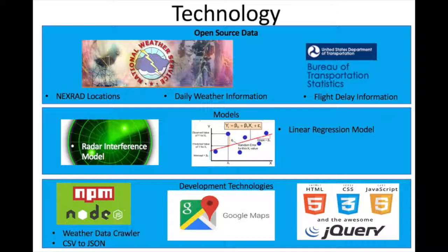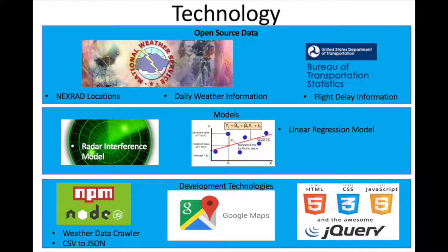In terms of development technologies, we found some pieces of code from NPM to help us crawl weather data from web services, and another piece to help us convert from CSV file format to JSON format. Our software is based on JavaScript, and we make use of jQuery quite extensively to handle and manipulate information and events. In the presentation layer, we make use of CSS, HTML, and Google Maps for visualization.